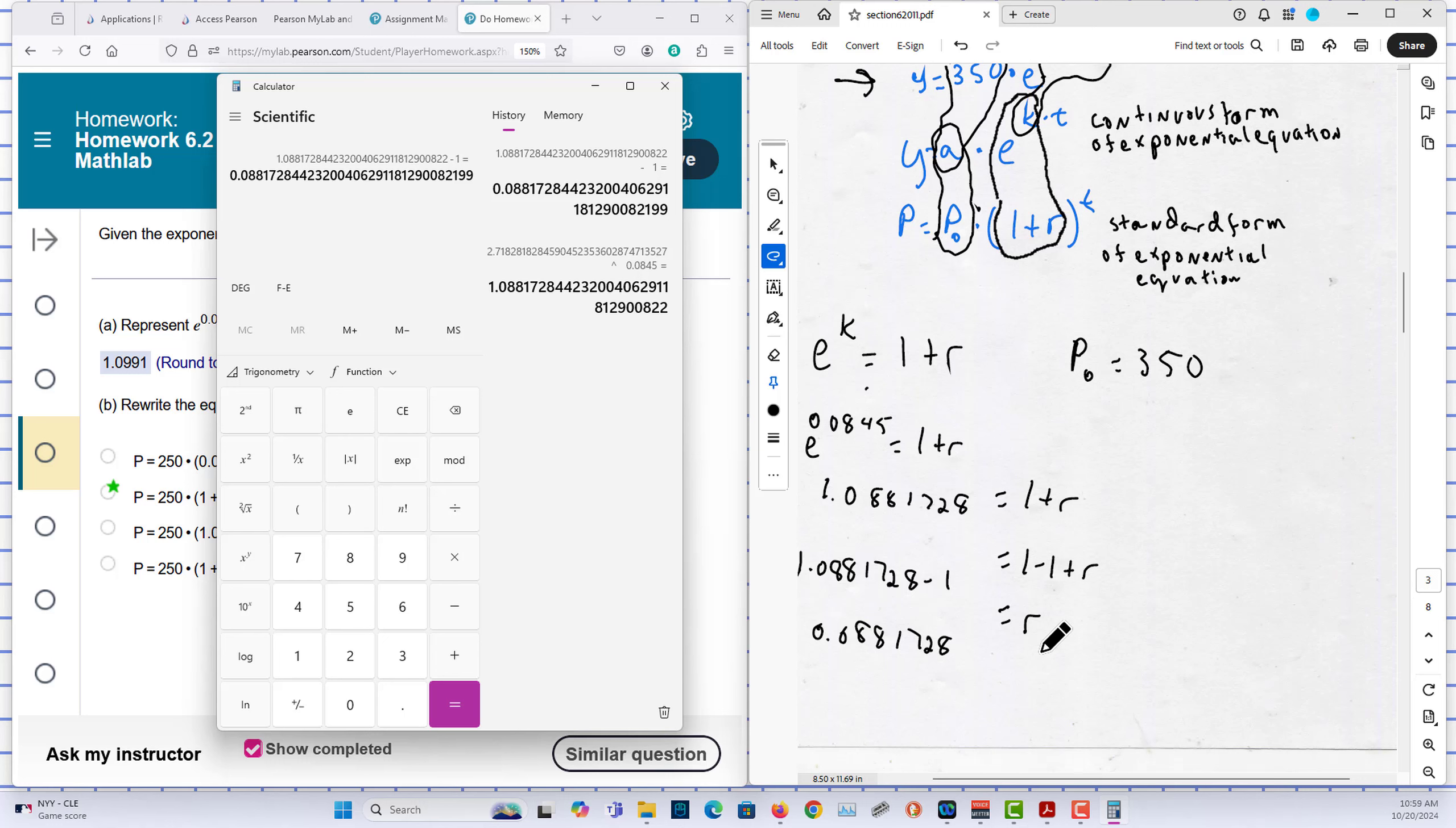And if I multiply that by 100, it will convert it to a percent. Or if I just shift my decimal place over two places, that percent is going to be equal to R equals 8.81728%. So now we know what R is.